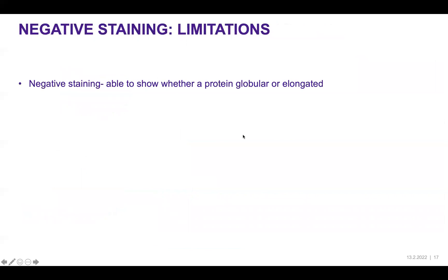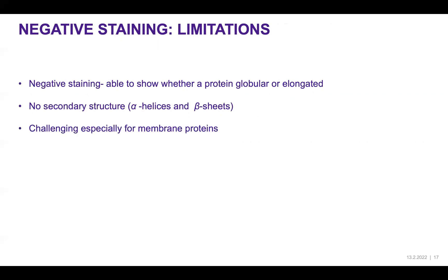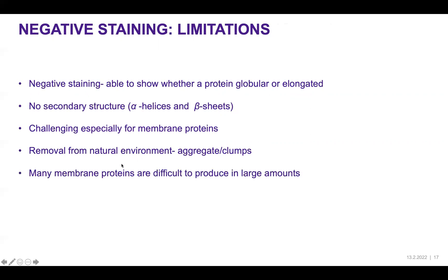However, negative staining has limitations. For proteins, it can indicate whether the structure is globular or elongated but cannot reveal secondary structure such as alpha helices or beta strands. It is very challenging to do negative staining of membrane proteins, partly because when membrane proteins are removed from their natural environment they begin to aggregate. Membrane proteins are also very difficult to produce in large amounts and do not crystallize, so negative staining, while excellent, is not universally applicable.